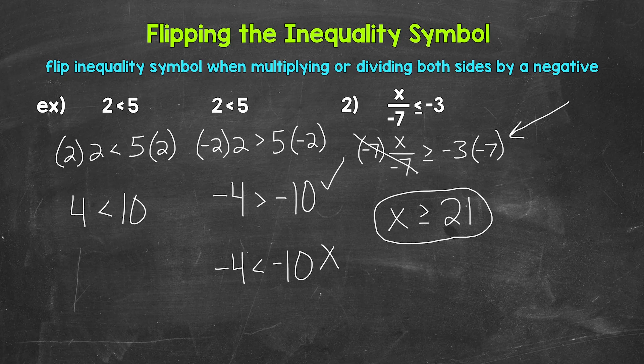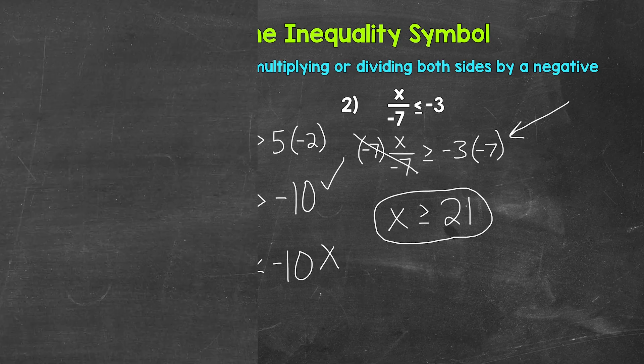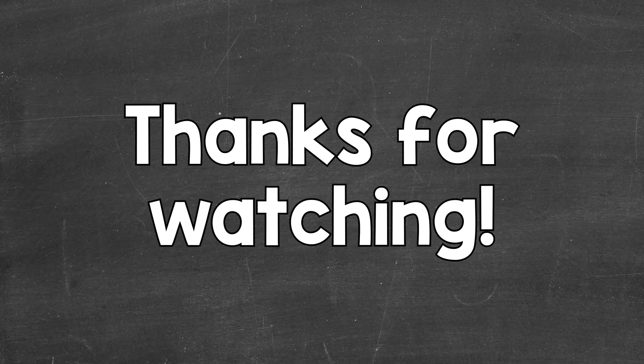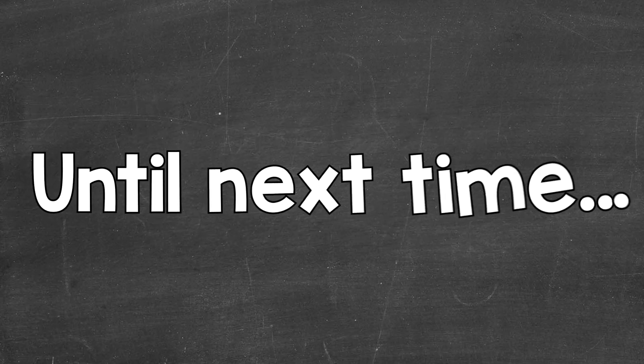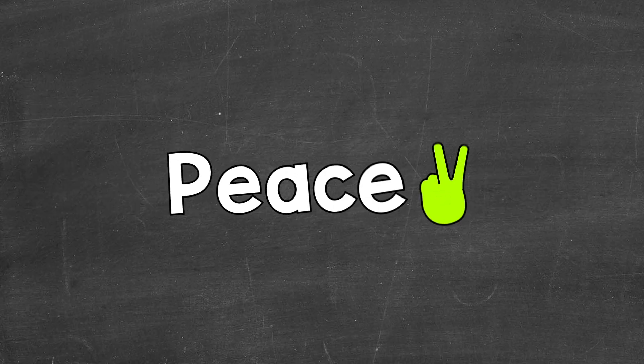If you forget to flip the inequality symbol, when you go to check a solution you'll notice that it won't work — so it's important to check and you can catch that mistake. So there you have it: that's how to solve one step multiplication and division inequalities. I hope that helped. Thanks so much for watching. Until next time, peace.